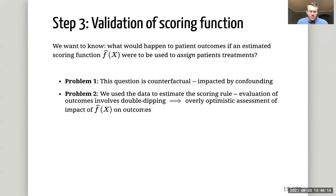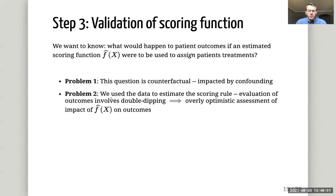What we also need to do is validate that the estimated scoring function actually results in improved outcomes — that is step three. We want to know what would happen to patient outcomes if an estimated scoring function were used to assign patients treatments. This question is counterfactual and impacted by confounding, and we also use the data to estimate the treatment scoring function. Evaluating outcomes conditional on subgroups involves double dipping and can provide a severely overly optimistic assessment of the impact of the scoring function on outcomes, especially with high-dimensional data. The personalized package addresses both of these problems.